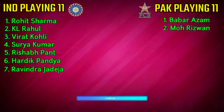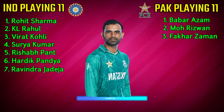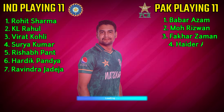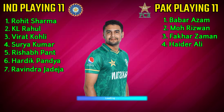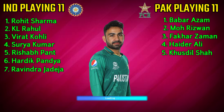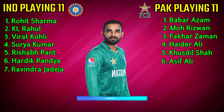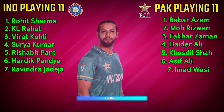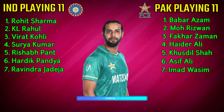Pakistan team middle order: 3. Fakhar Zaman — Left-Handed Batsman. 4. Haider Ali — Right-Handed Batsman. 5. Khushdil Shah — Left-Handed Batsman. 6. Asif Ali — Right-Handed Batsman. 7. Imad Wasim — All-Rounder.